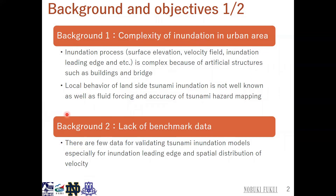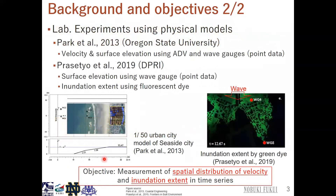The other background is the lack of benchmark data. We can use data about inundation depth or run-up height obtained by surveys in past events. However, there are few data for validating tsunami inundation models, especially for inundation leading edge and the spatial distribution of velocity. Recently, several laboratory experiments using physical coastal city models have been done to obtain detailed validation data.